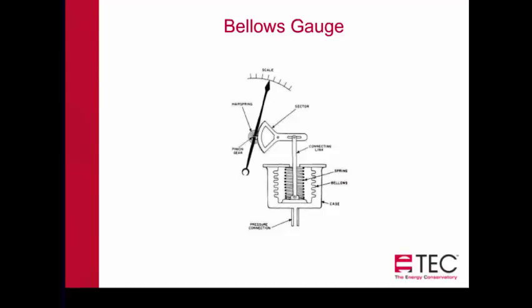A variation is the bellows gauge. As pressure is applied into a piston area, as that area fills up, the bellows compresses. The compression is linked to a mechanical mechanism, which is further linked to a needle. A scale is created behind that so that when pressure is exerted, the bellows pushes up, moves the linkage, and increases the scale reading.